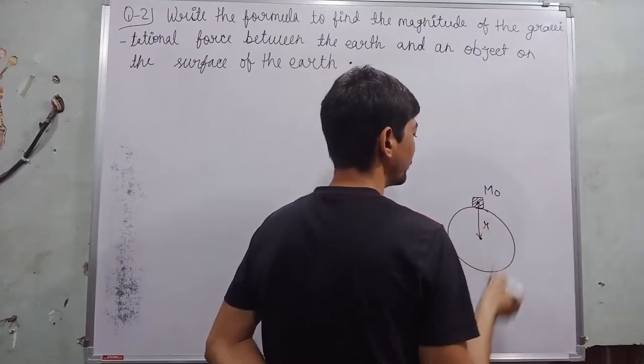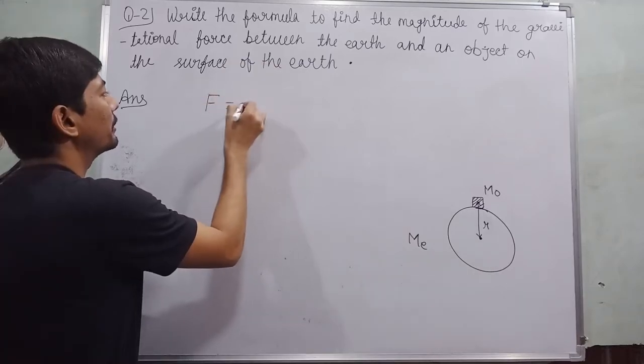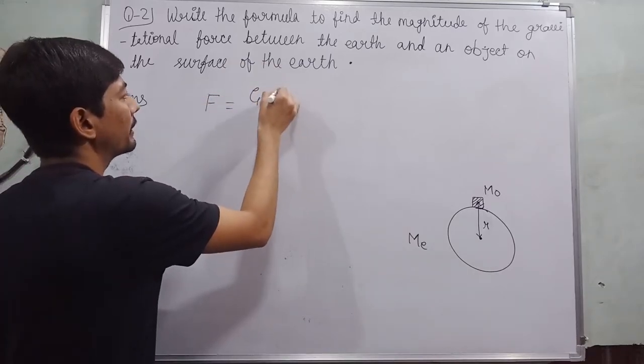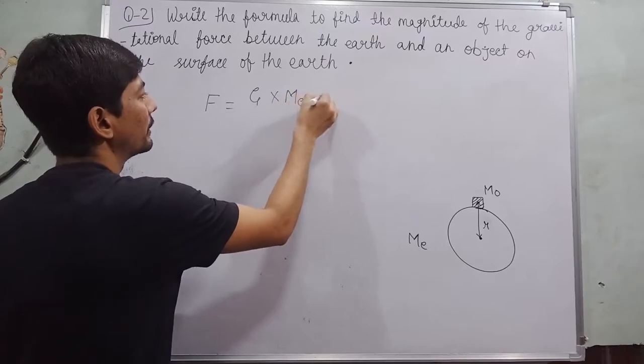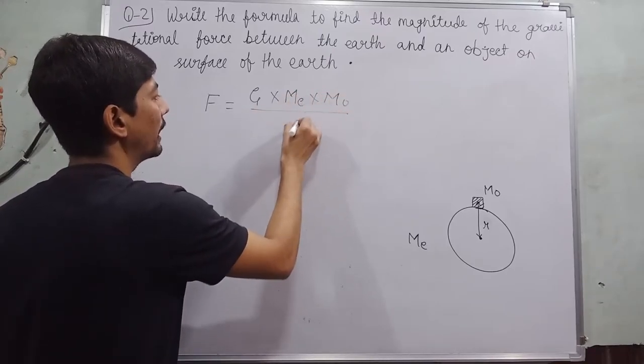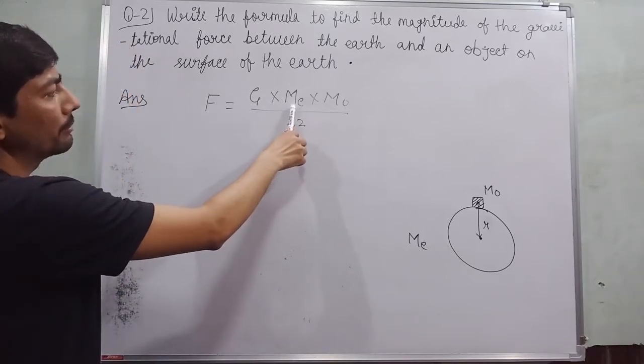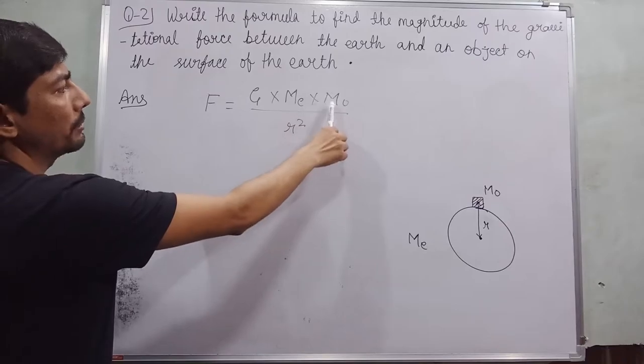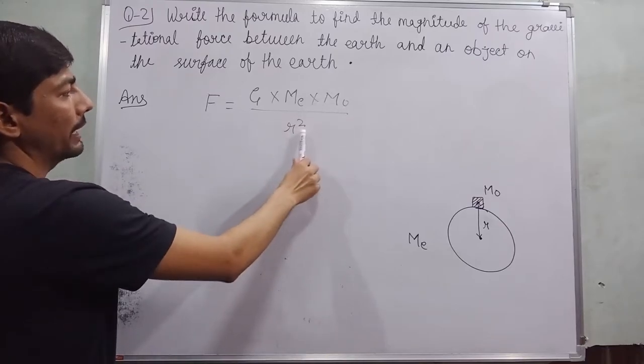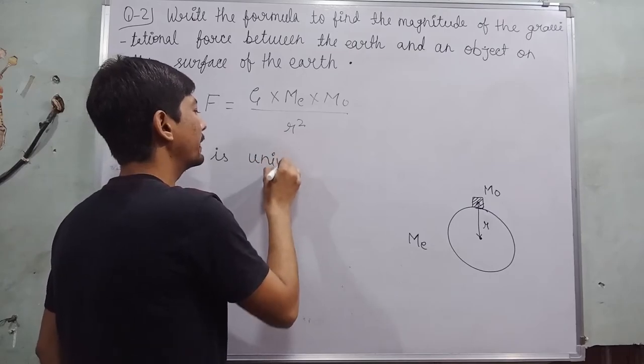Then the magnitude of force between them is capital F equals capital G times mass of Earth times mass of object over r squared. Capital F equals capital G times Me times Mo over r squared, where capital G is the universal gravitational constant.